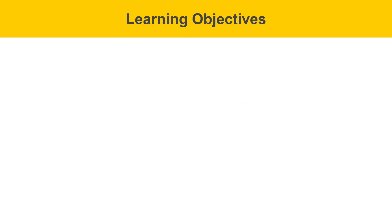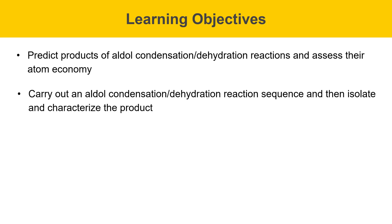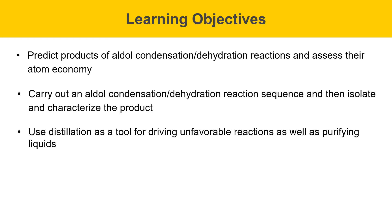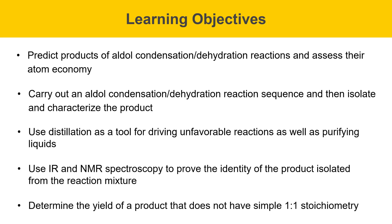Learning objectives for this experiment are described on this slide. At the end of this experiment, you'll be able to predict products of an aldol condensation dehydration reaction sequence and assess their atom economy, carry out the reaction and isolate and characterize the product, use distillation as a tool for driving an unfavorable reaction as well as purifying liquids, use IR and NMR spectroscopy to prove the identity of the product, and determine the yield of a product that doesn't have simple one-to-one stoichiometry.